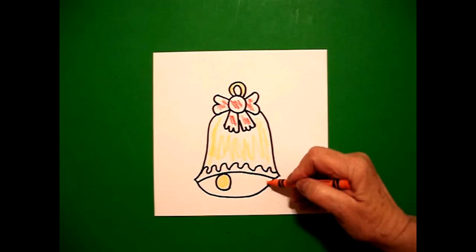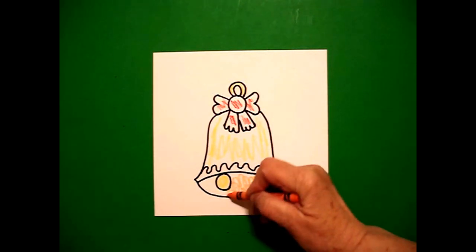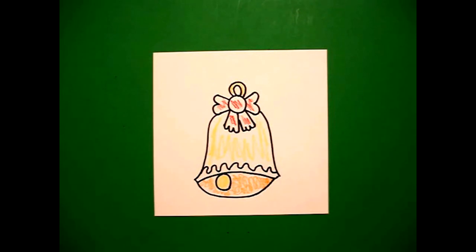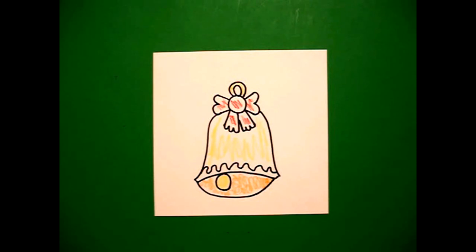And then, just to show a little differentiation, I'm going to make the inside a yellow-orange. Now, you can do these in all kinds of color combinations. You can write somebody's name. You could do a blue and white color. You could do silver bells. It's endless.